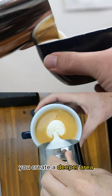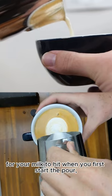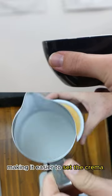Firstly, by tilting the cup you create a deeper area for your milk to hit when you first start the pour, making it easier to set the crema.